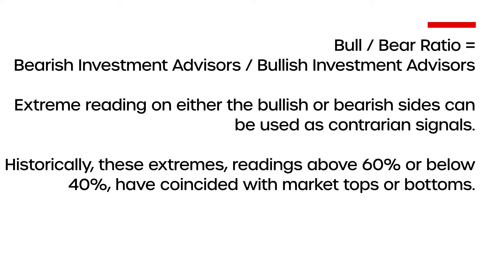The ratio encompasses bearish investment advisors divided by the bullish investment advisors. Extreme readings on either the bullish or bearish side can be used as a contrarian signal. Historically, these extreme readings — above 60 or below 40 — have coincided with market tops or bottoms.